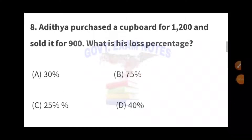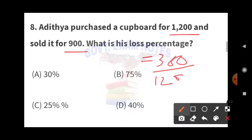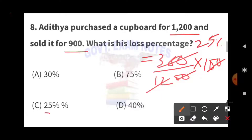Next is another maths question. Aditya purchased a cupboard for 1200 rupees and sold it for 900 rupees. What is his loss percent? Since he bought it for 1200 and sold for 900, the loss is 1200 minus 900 equals 300 rupees. We calculate the loss percentage based on cost price: 300 divided by 1200 equals 25%. So the loss percentage is 25%, which is option C.